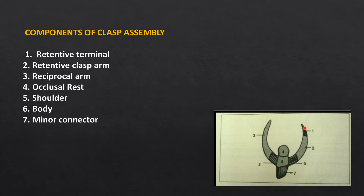The components of a clasp assembly are: first, a retentive terminal — the pointy tip; then the retentive clasp arm; the reciprocal clasp arm; the occlusal rest; the shoulder — the shaded area; the body; and seventh, the minor connector, which attaches the direct retainer assembly or clasp assembly to the cast partial framework.